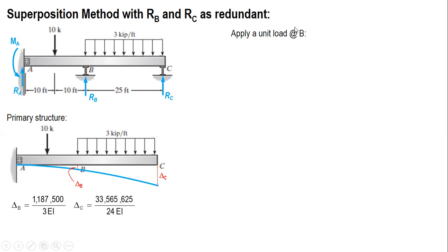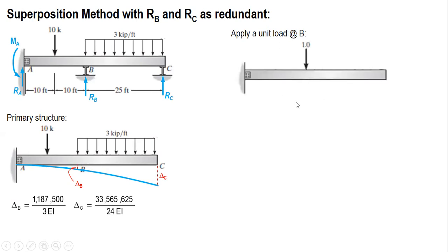Next, we apply the first redundant RB. We remove the real loads and apply a unit load at B. We denote delta_bb as the deflection at B due to a unit load acting at B, and delta_cb as the deflection at C due to a unit load acting at B. The double subscript notation indicates: first subscript is where deflection is measured, second subscript is where the load is applied.